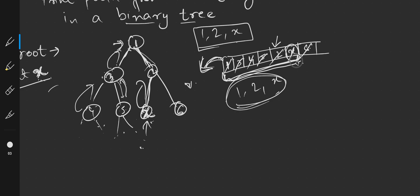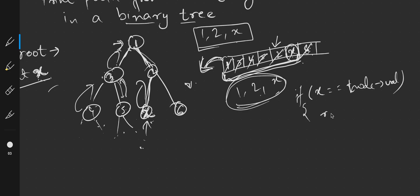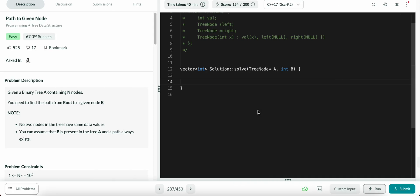Once we have encountered X, there should be no further addition or deletion of any element in the vector. To handle this, once the node's value equals X, we return true from the helper function. That return true ensures no further modification happens to our answer vector. This will become clear once we start writing the code.